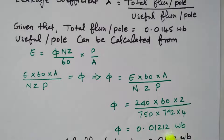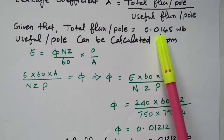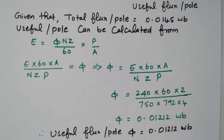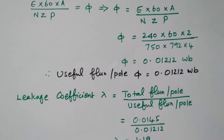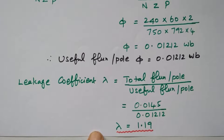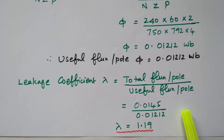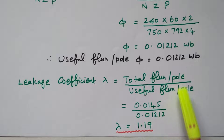This result of 0.01212 Weber is less than the total flux of 0.0145 Weber — only this much flux is utilized as useful flux. Now we have the useful flux value, so we can calculate the leakage coefficient. Lambda equals total flux per pole divided by useful flux per pole: 0.0145 divided by 0.01212 equals 1.19. The leakage coefficient is 1.19.